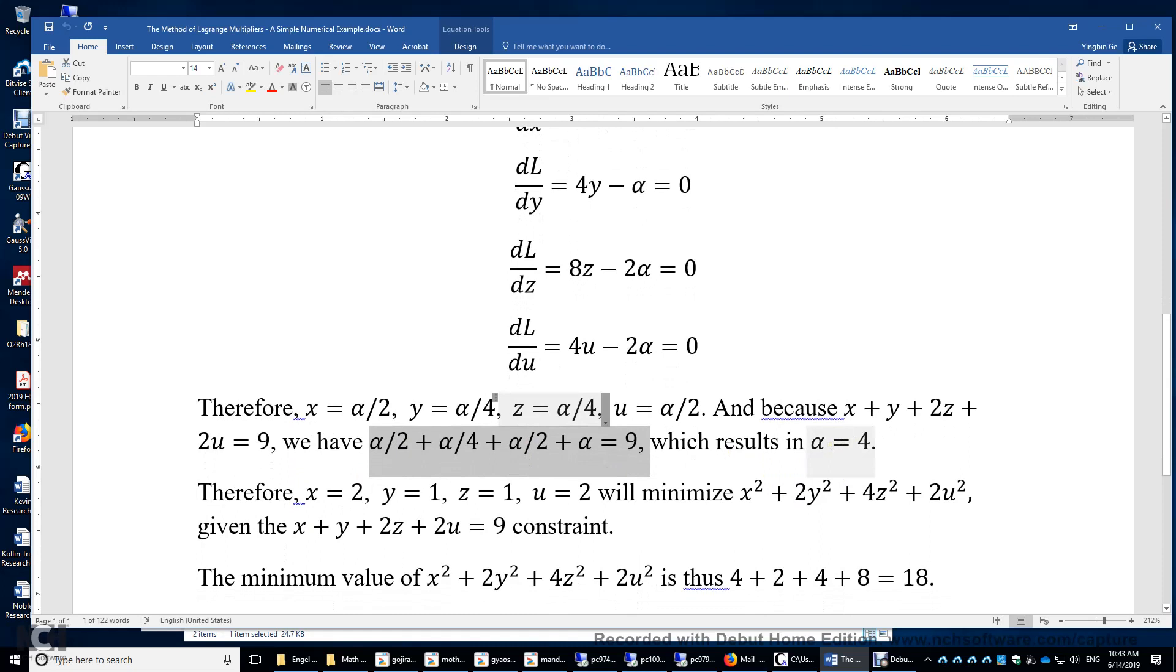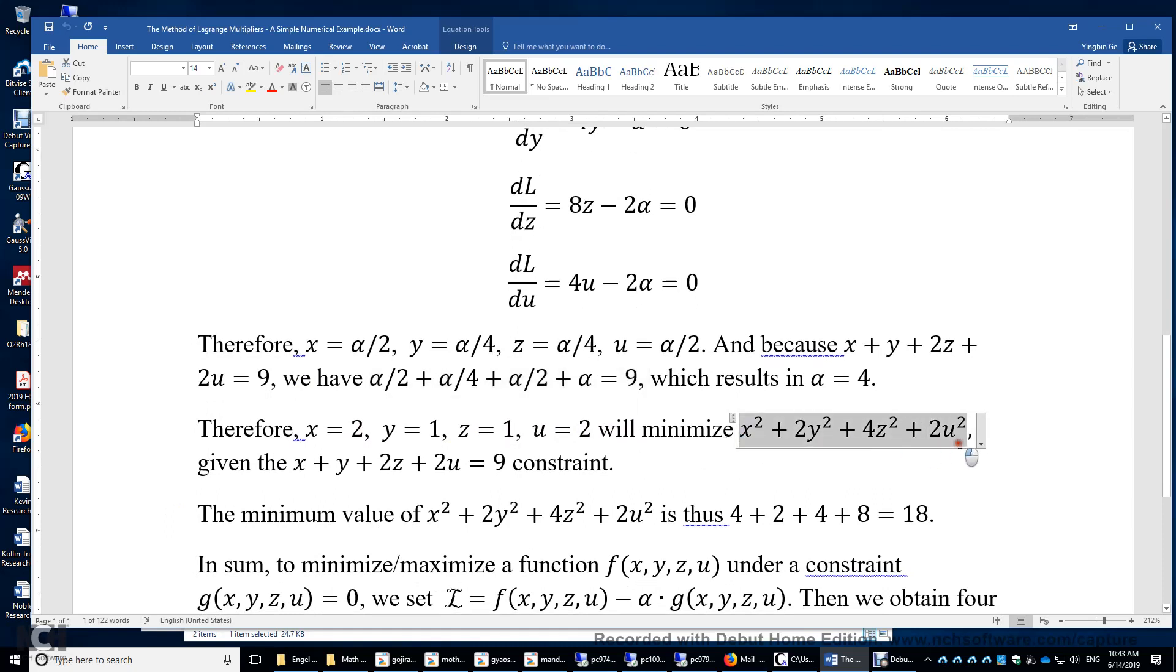After you solve this, this is just 2.25 alpha equals 9, alpha equals 4. And then we plug in the value of alpha back in here, here, here, and here. We get the value of x, y, and z. And u: x equals 2, y equals 1, z is 1, u is 2. And then we can minimize this function. The minimum value is 18 by plugging in those numbers. And also, you can double check these four numbers, these values of x, y, z, and u satisfy this equation of constraint.